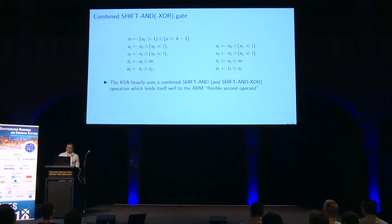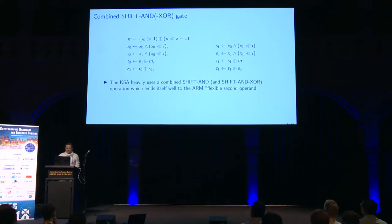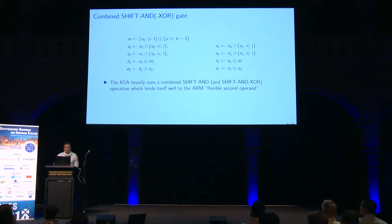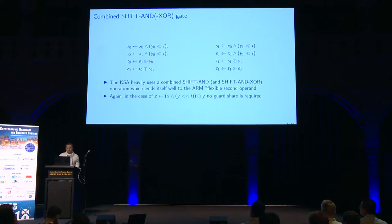Then we can implement a shifted AND-XOR gate, which is quite heavily used by the Kogge-Stone adder. This lends itself quite well to the ARM flexible second operand, which can perform one of these calculations in a single instruction. And we can also combine this with an XOR, so we don't need a refresh mask at all.